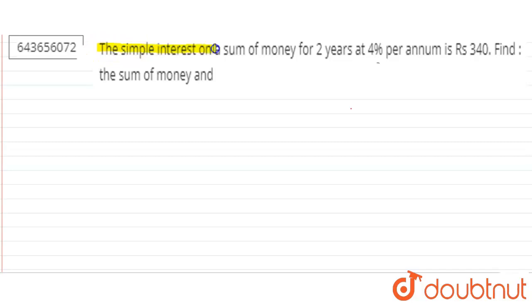The simple interest on a sum of money for 2 years at 4% per annum is Rs. 340. Find the sum of money. Simple interest is given to us as 340, time is given as 2 years, and rate is given as 4%.